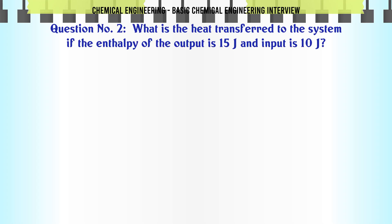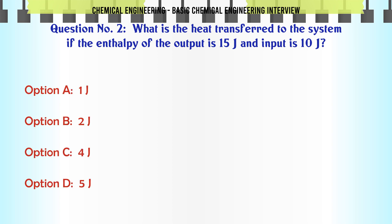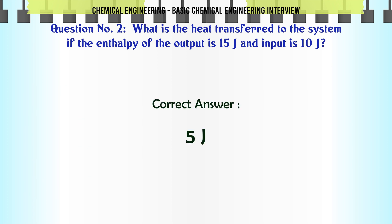What is the heat transferred to the system if the enthalpy of the output is 15 J and input is 10 J? A) 1 J. B) 2 J. C) 4 J. D) 5 J. The correct answer is 5 J.